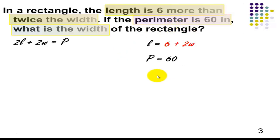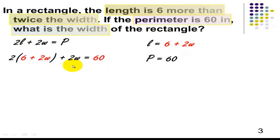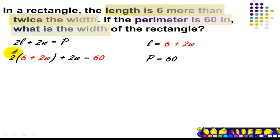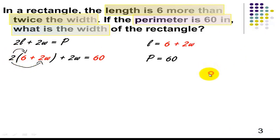The question is, what is the width? First, I'm going to replace L here by 6 plus 2W. Next, we are going to distribute our 2: 2 times 6 and then 2 times 2W. 2 times 6 is 12. 2 times 2W is 4W.